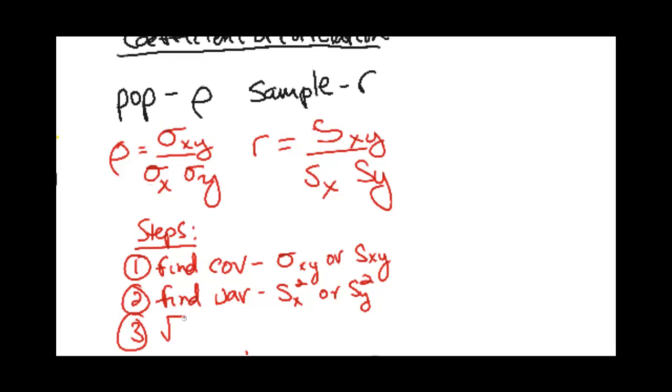Three: square root the two variances to get the standard deviations. Again, these could be sigmas, depending on population or sample.